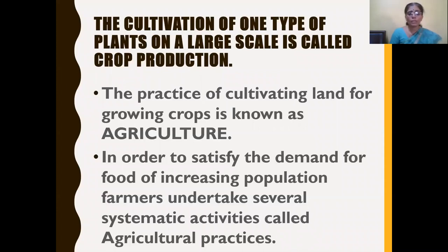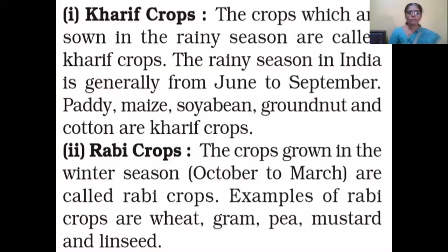When and how did agricultural practices start? Due to increase in population, in order to satisfy the demand for food for all, farmers undertake several systematic activities called agricultural practices. And these crops can be classified into two types: Kharif crops and Rabi crops.